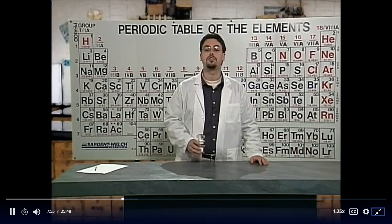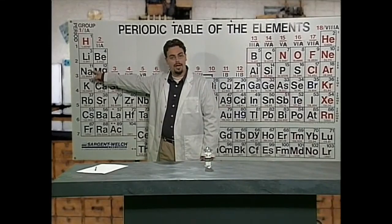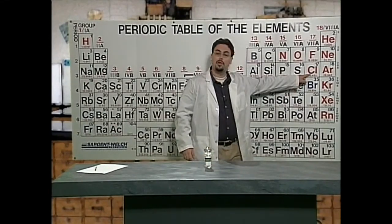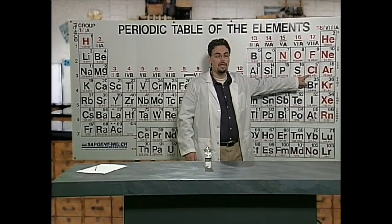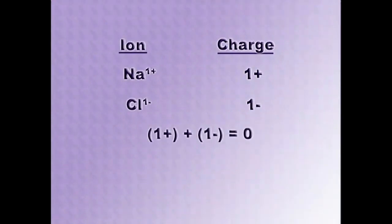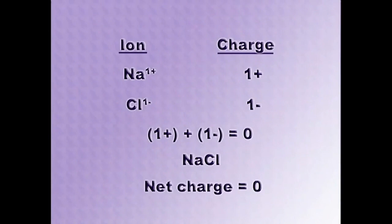Here's an example — let's write the formula for sodium chloride, common table salt. Sodium is in group 1, so it needs to lose one electron to become stable, giving it a +1 charge. Chlorine is in group 17, so it needs to gain one electron, giving the chloride ion a -1 charge. Adding +1 and -1 gives zero. Writing the cation first, then the anion, the formula for sodium chloride is NaCl — one sodium ion and one chloride ion with a net charge of zero. Subscripts of one are understood but not written.